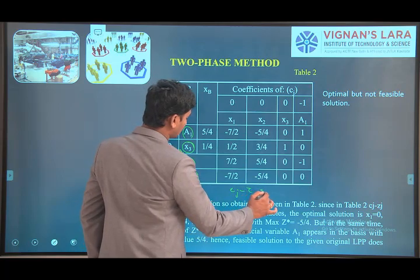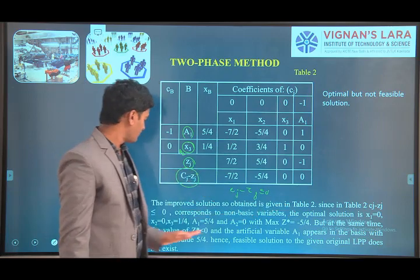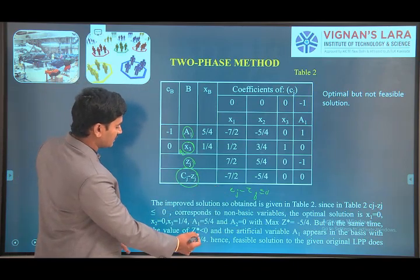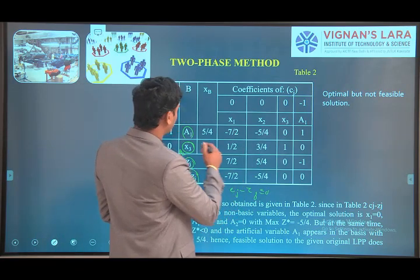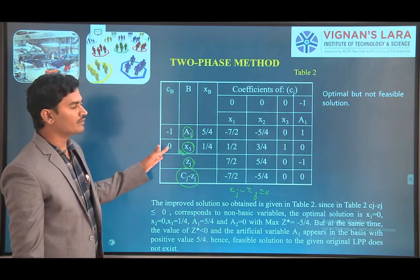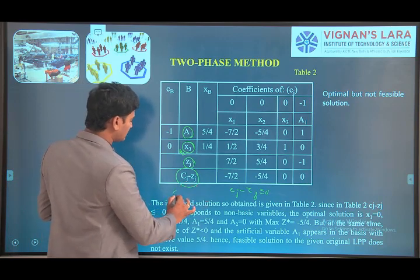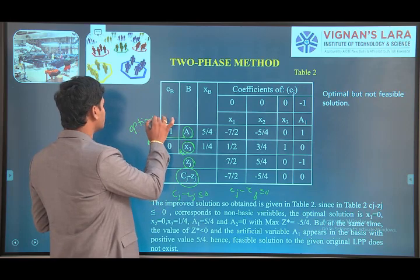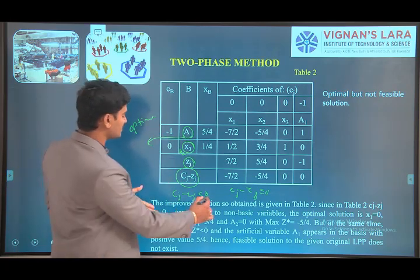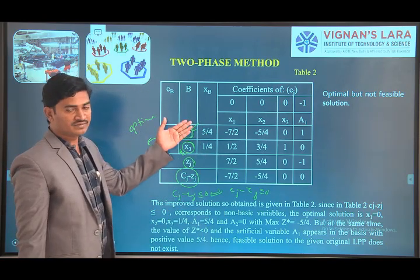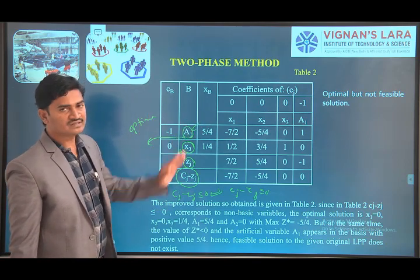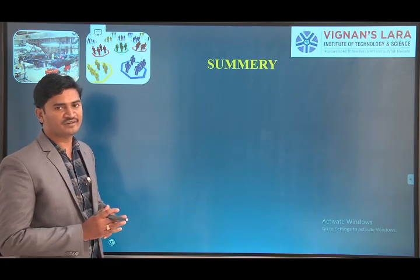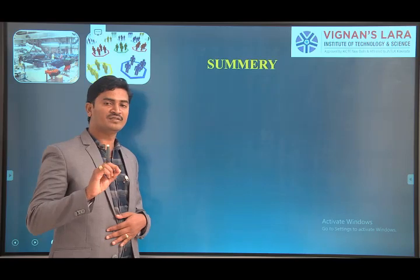After the iteration, cj − zj ≤ 0 is satisfied in all cases, so the improved solution is optimal for phase 1. However, the artificial variable a1 is still in the basis. When cj − zj ≤ 0 is satisfied but an artificial variable remains in the basis, the solution is infeasible. Therefore, we stop at phase 1 — there is no need to go to phase 2. The problem is infeasible.